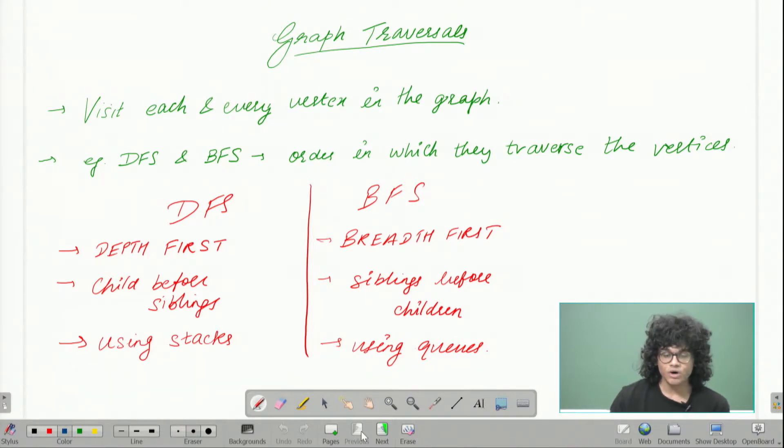The most two common techniques that we use are DFS and BFS. And again, how they differ from each other is the order in which the vertices are visited.